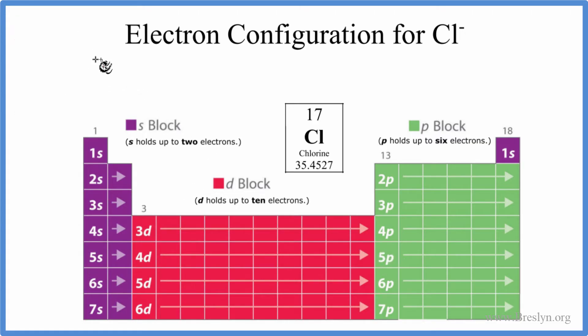So we'll write chlorine, just Cl, and we'll start with 1s. That's the first orbital. S's can hold up to two electrons, 1s1, and then 1s2. We'll put two in there. Then we go to 2s, 2s1, 2s2.